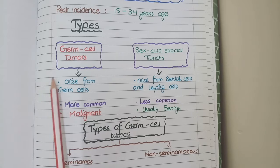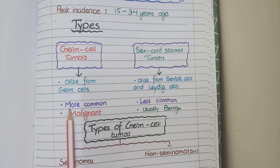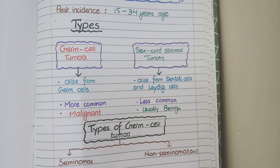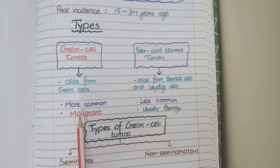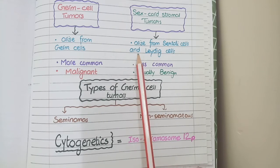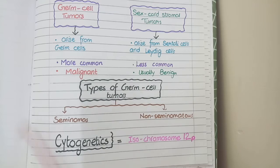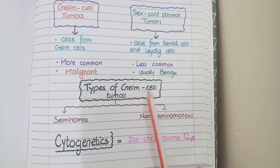Germ cell tumors are relatively much more common than sex cord stromal tumors. In fact, more than 95% of testicular tumors are germ cell tumors. Unfortunately, almost all of the germ cell tumors are malignant. In contrast, sex cord stromal tumors originating from Sertoli cells or Leydig cells are relatively much less common, and even if they develop, they are usually benign.